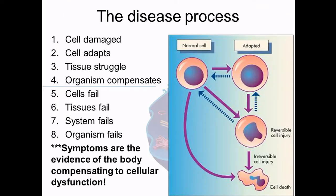The next major concept is the disease process. The first thing that happens is the cell is damaged — by a chemical, physical change, smashing, or heating. That cell has to adapt. As it's adapting, the whole tissue struggles. Say you're damaging the cell by depriving it of oxygen — the whole tissue starts struggling. If it's skin tissue, you might see hair falling out, nails getting dry and brittle, skin sloughing off. That's the cell adapting. The organism overall compensates and tries to adapt.